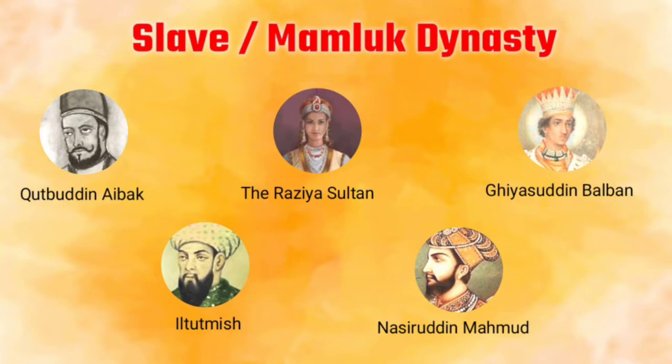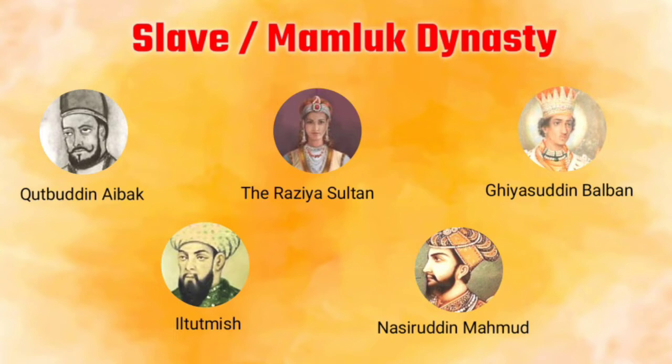Now let us know more about the Slave dynasty. This dynasty is also referred to as the Mamluk dynasty. Mamluk is an Arabic word which means slave. Qutbuddin Aibak, who was the first Sultan of Delhi, was the slave of Muhammad Gauri, and that is why this dynasty is known as the Slave dynasty or Mamluk dynasty.